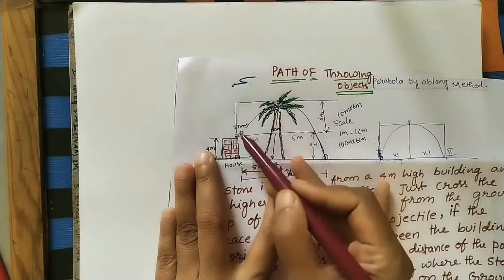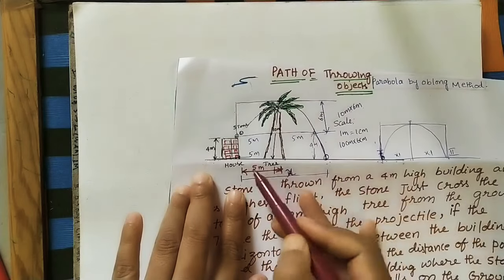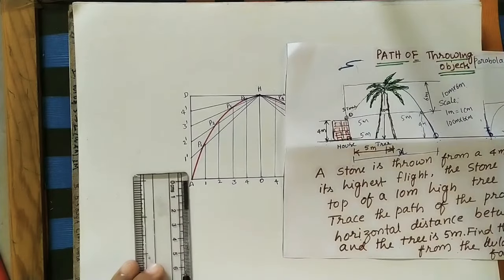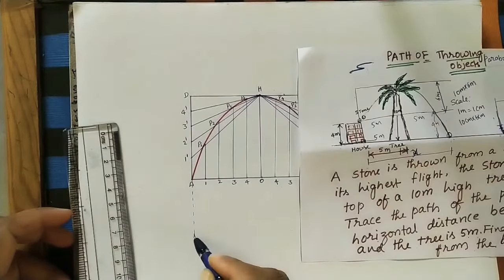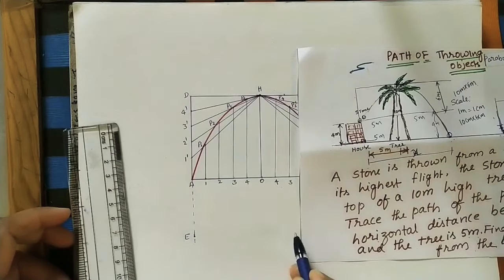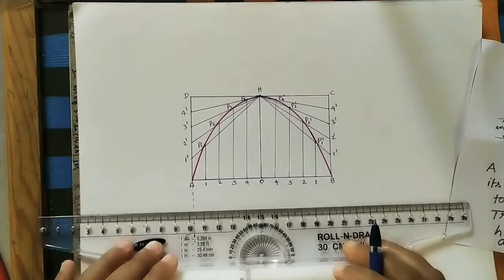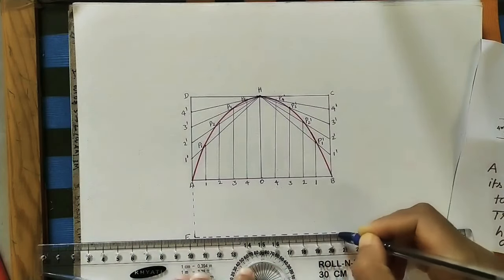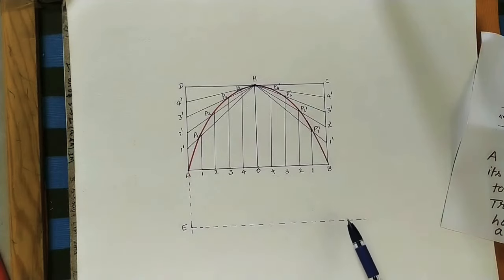Now, in the given question we have done the parabola for this part. We need to mark the building height of four meters. At four centimeters mark point E and draw a horizontal dotted ground line from E. Using a roller scale, draw the ground line at E — this represents the ground from which the object falls.